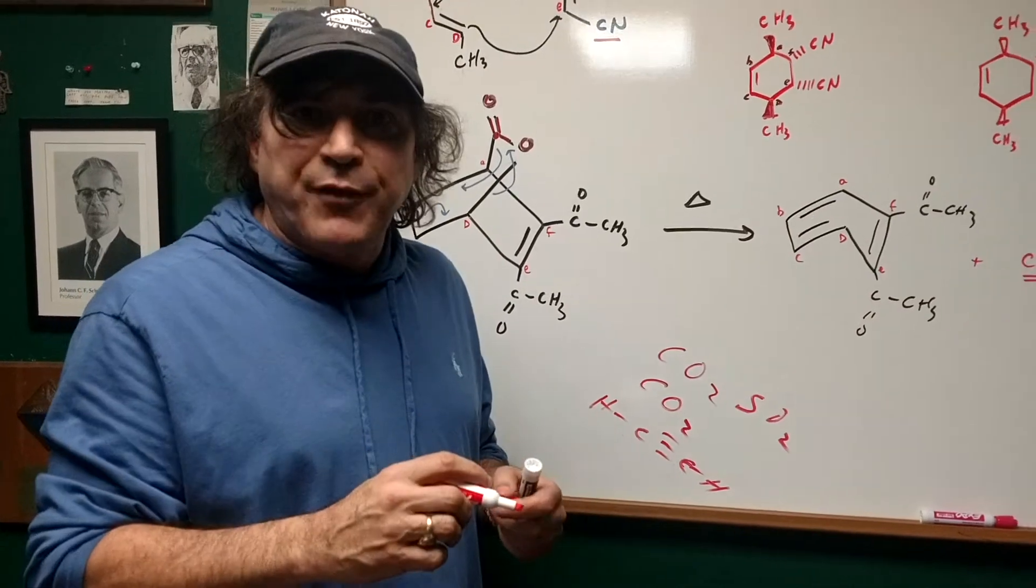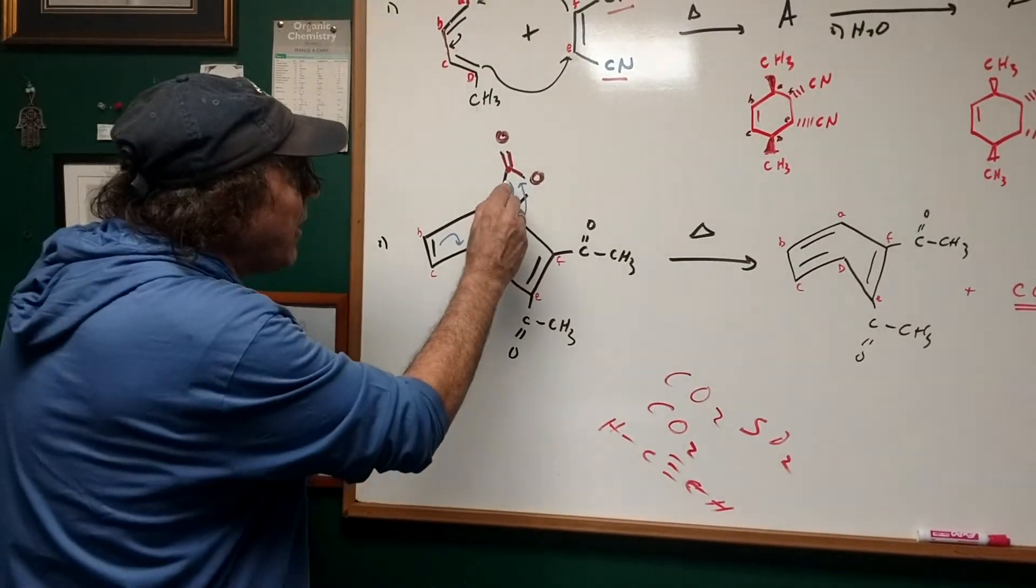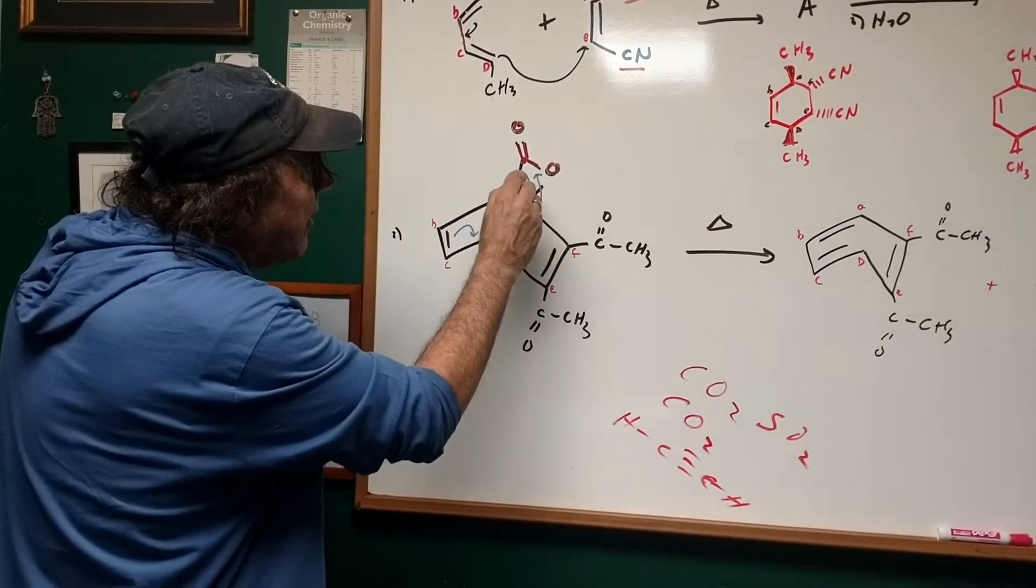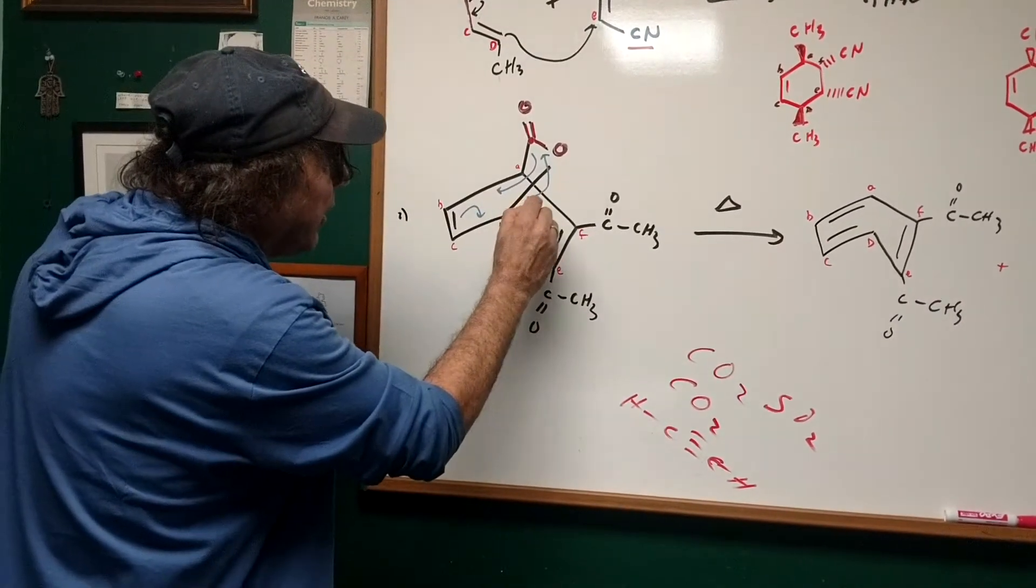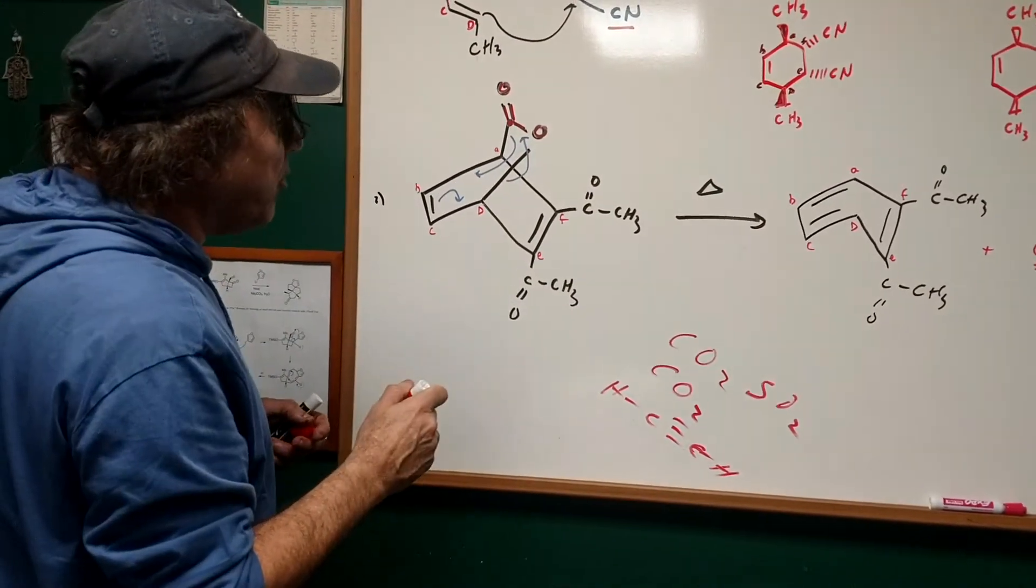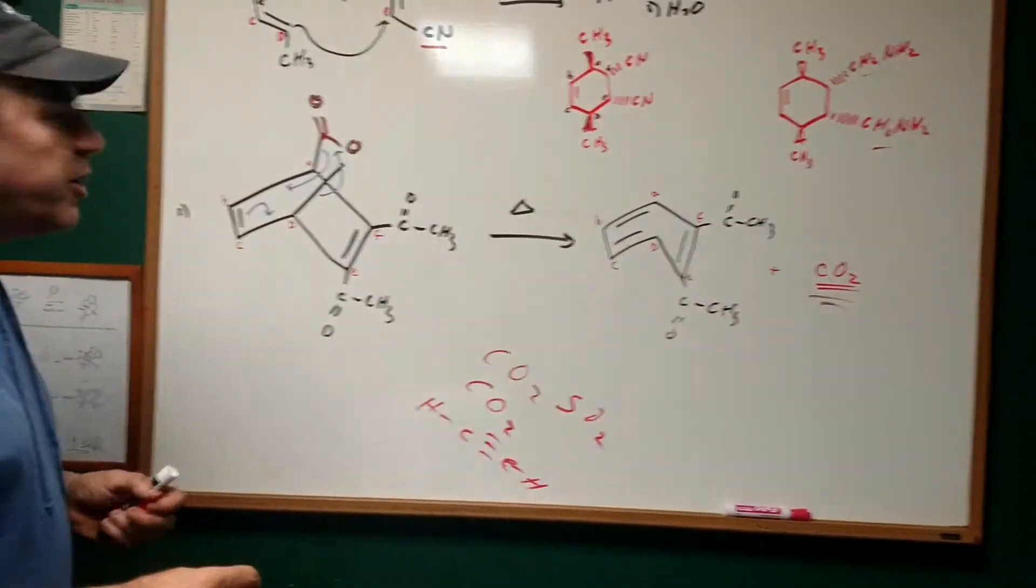What I'm going to do is I'm going to do the reaction in reverse. Once again, the three famous Diels-Alder arrows. I'm going to move one arrow here, one arrow here, and one arrow there. By doing that, that knocks off the CO2.